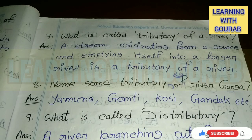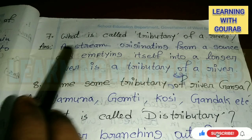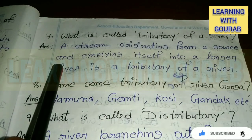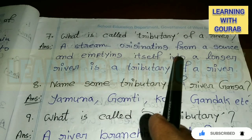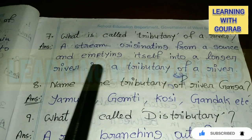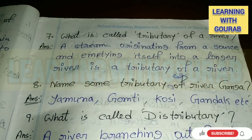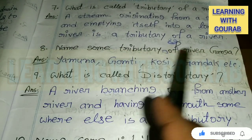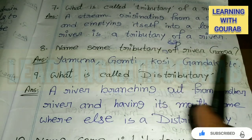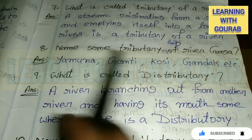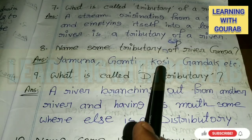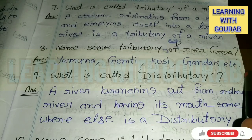Next: What is called a tributary of a river? Answer: A stream originating from a source and emptying itself into a longer river is a tributary of a river. Name some tributaries of the river Ganga. Answer: Yamuna, Gomti, Kosi, Gandak, etc.